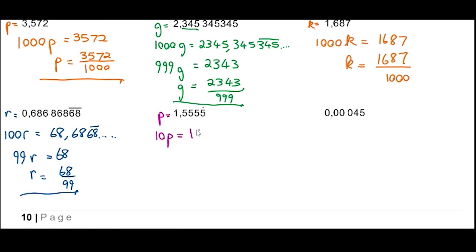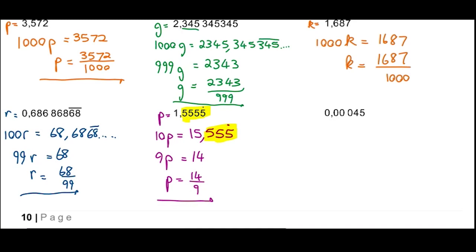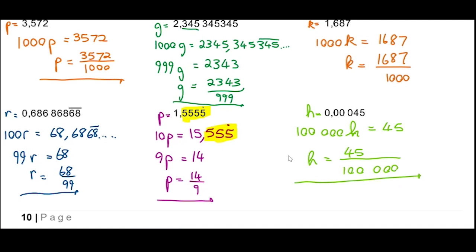For 1.555... repeating, let that be p. Multiply by 10 since there's one repeating decimal: 10p = 15.555... Subtracting, 9p = 14, so p = 14 over 9. For the last one, 0.00045 — this terminates — let that be h. Multiply by 100,000 to get 45, so h = 45 over 100,000, which simplifies. We've managed to write all these as a ratio of two whole numbers.